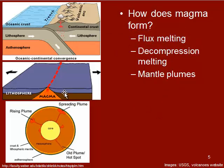At divergent plate boundaries, we have what's called decompression melting. We have two plates being pulled apart from one another. As those plates are being pulled away from each other, the pressure on the asthenosphere in the center is released. Because of that drop in pressure, the magma then turns to a liquid — the mantle that exists below this crust is under high amounts of pressure. That increased pressure causes the magma, even though it's well past its melting point, to remain solid. But once that pressure is released, magma is then created at that boundary. That's called decompression melting.